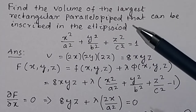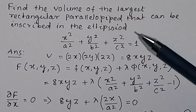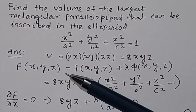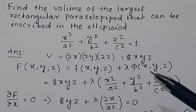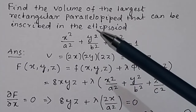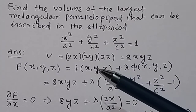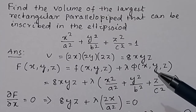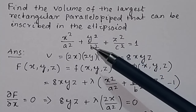We have to find the volume of the largest rectangular parallelepiped by the method of constraint optimization using Lagrange multipliers. Any function can be written as F(x,y,z) = f(x,y,z) + λφ(x,y,z), where f(x,y,z) is the objective function — here the volume of the largest rectangular parallelepiped — and λ is the Lagrange multiplier, and φ(x,y,z) is the constraint, which is the ellipsoid equation.